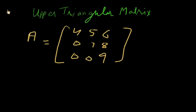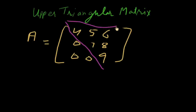We are seeing the matrix — the right side triangle is showing — so this matrix is an upper triangular matrix.